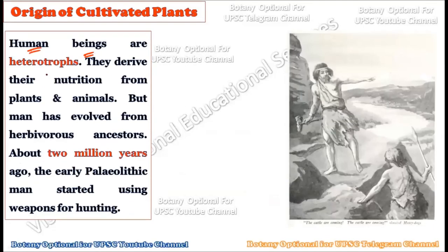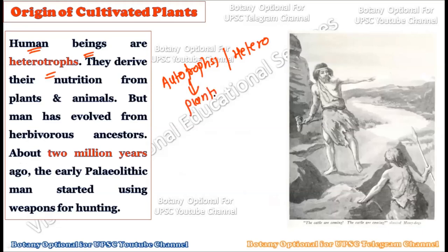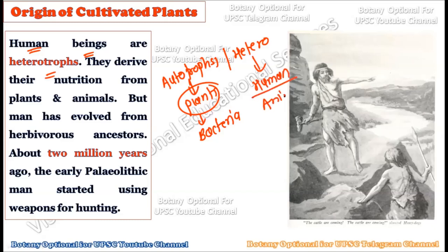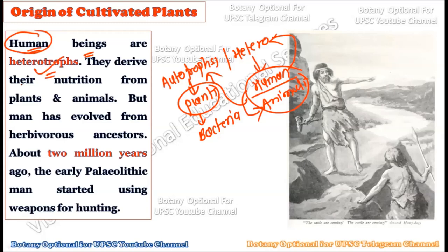As an introductory point, human beings are heterotrophs. When we divide living organisms, we divide them into two types: autotrophs and heterotrophs. Autotrophs — like plants and certain bacteria — can prepare their own food. Humans and animals, on the other hand, are heterotrophs because they cannot prepare their own food and depend on other organisms, including plants and animals, for their nutritional needs.